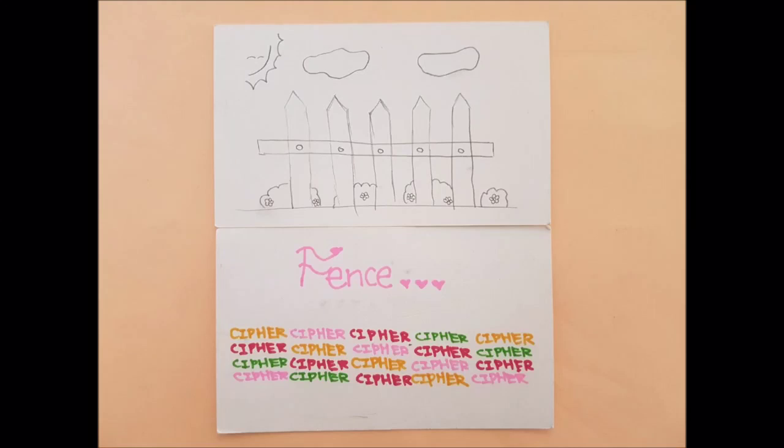It also has the security of a key to make it a little bit harder to break. The railfence cipher works by writing your message on alternate lines across the page and then reading off each line in turn.